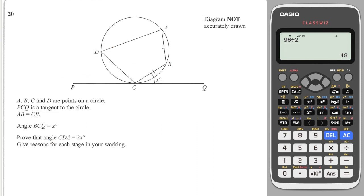The final question is a 'prove that' question, which you don't see very often on the IGCSE but it can come up in the AQA Level 2 Further Maths. We need to prove that angle CDA = 2x.